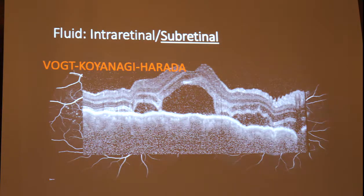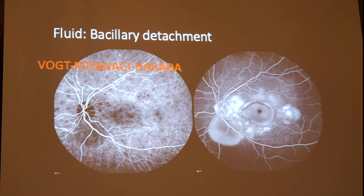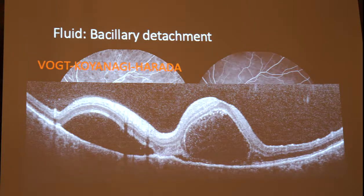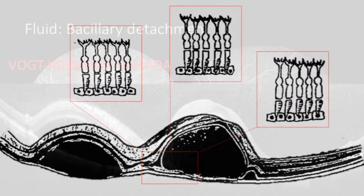I want to show a particular case of Vogt-Koyanagi-Harada disease. In another patient with the same diagnosis, the ICG showed hypofluorescent spots secondary to the choroiditis. The pooling in the macula had a strange hyporeflective ring surrounding a central hyperfluorescence. The OCT revealed a very peculiar pattern of fluid accumulation between the ellipsoid zone — which remains attached to the RPE — and the external limiting membrane. This pattern has been called bacillary detachment; we don't yet know exactly where the splitting occurs, whether between the outer and inner segments or at the ellipsoid zone.